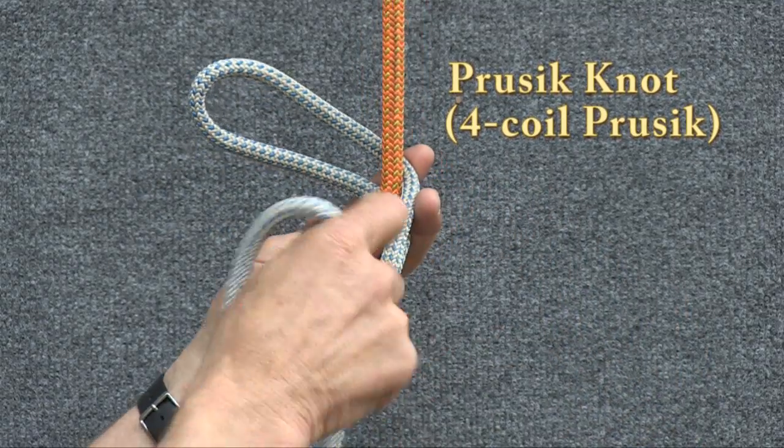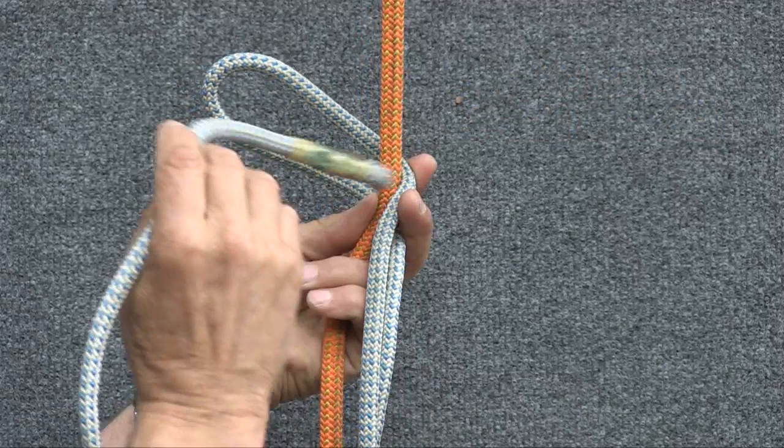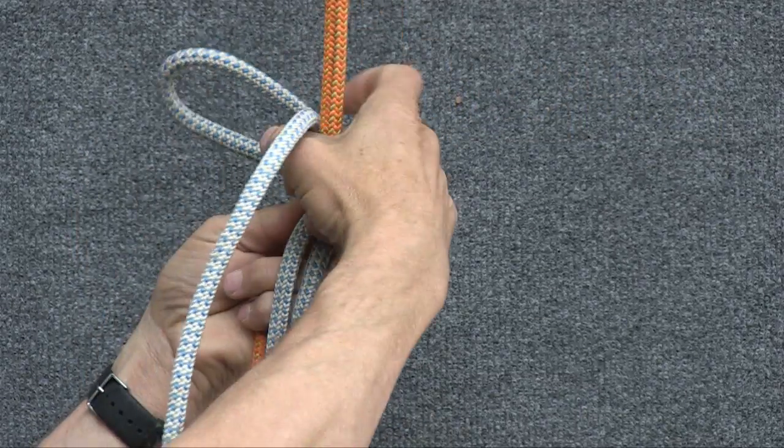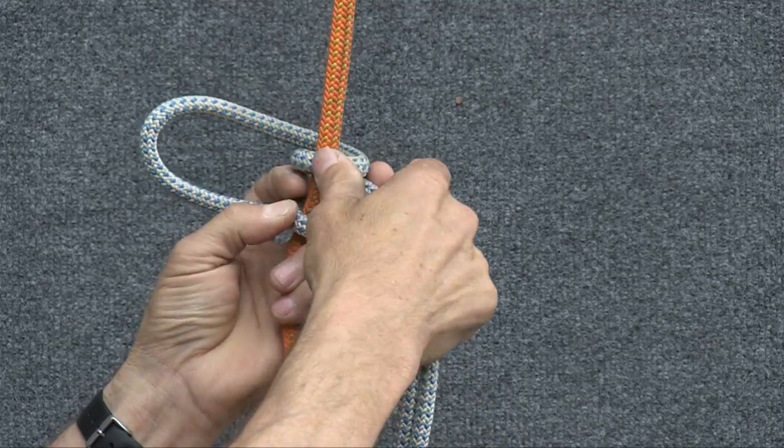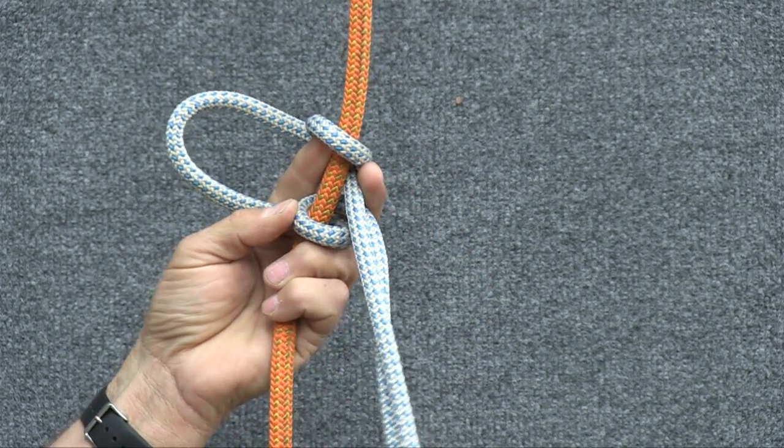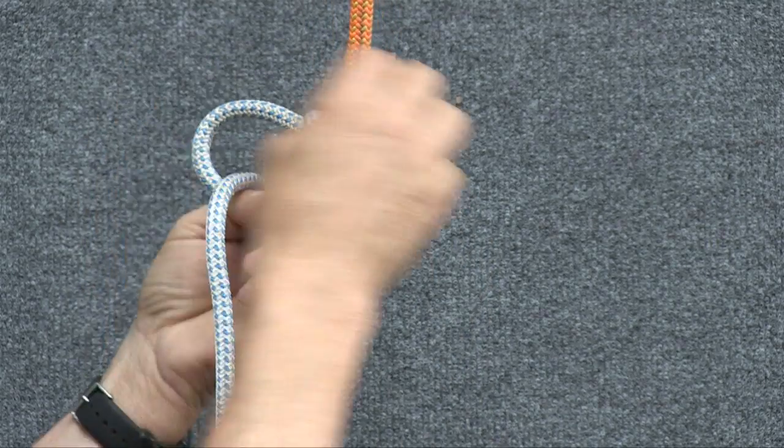You then run the end of the rope through that loop twice. So you take it once through like that and then you go through again like that.